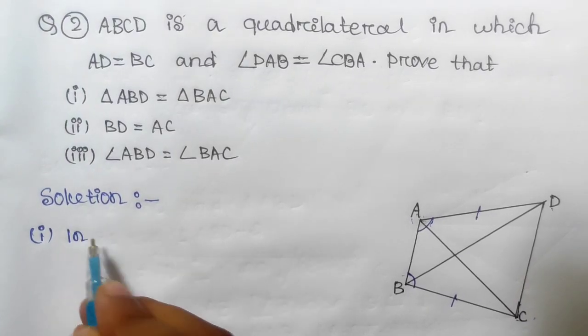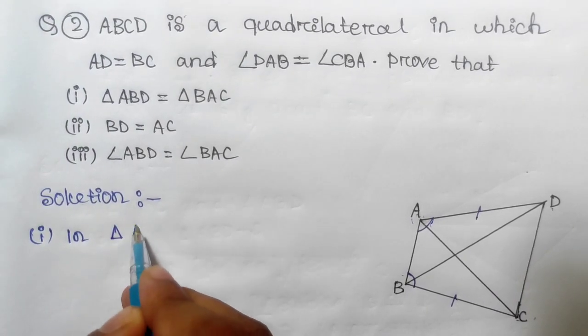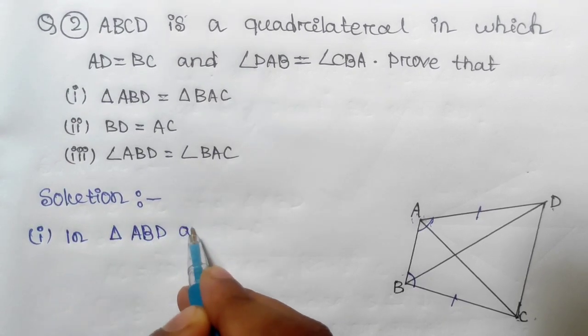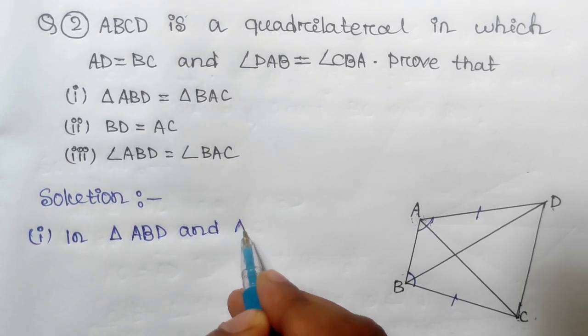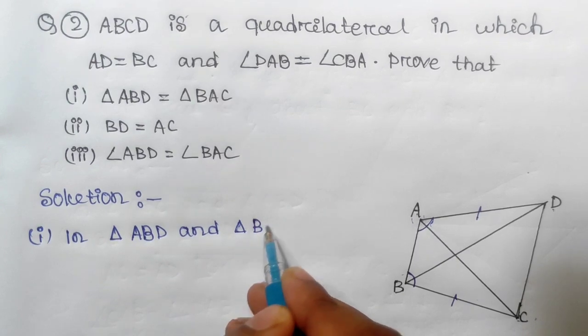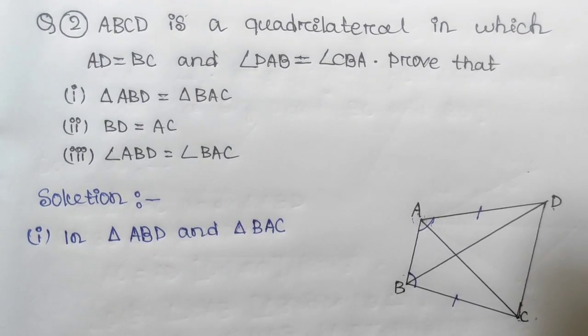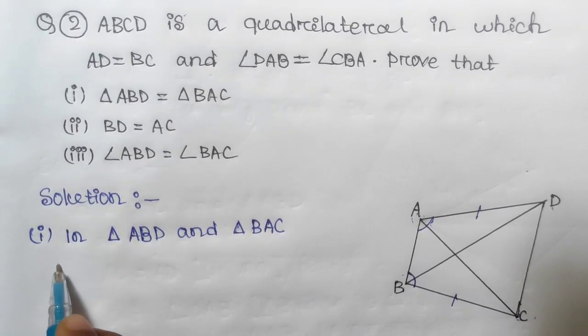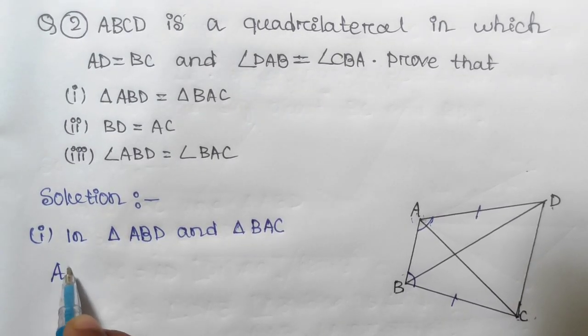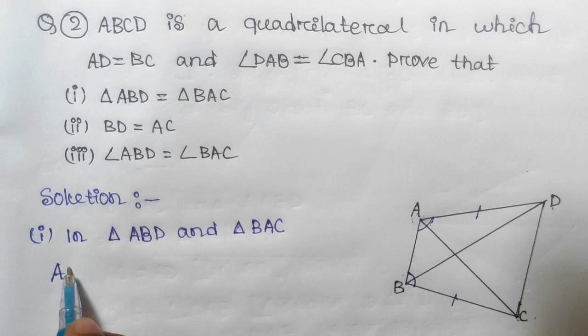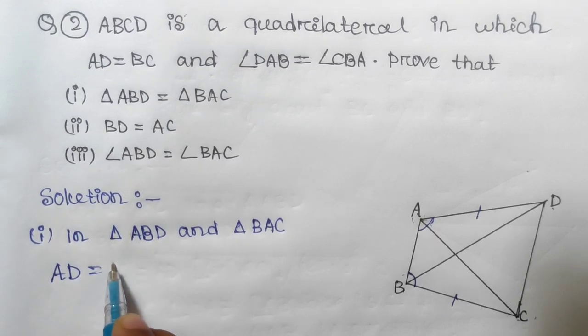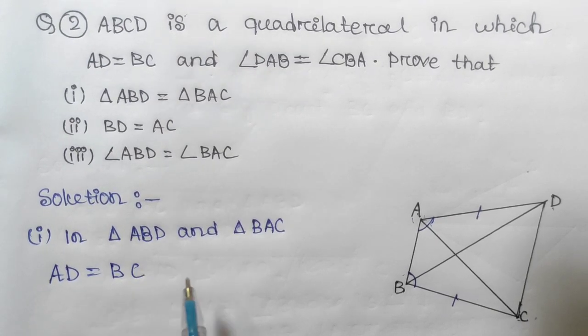In triangle ABD and triangle BAC, look at this - AD equals BC. This is given in the problem.